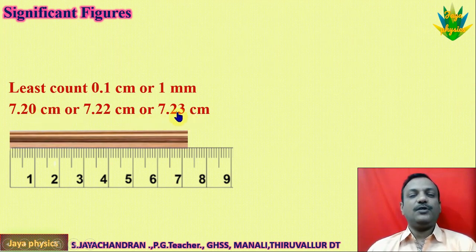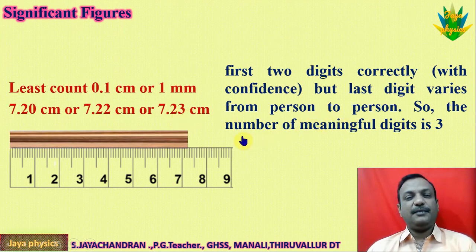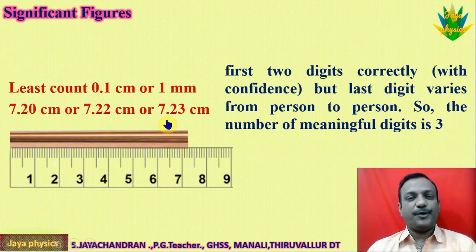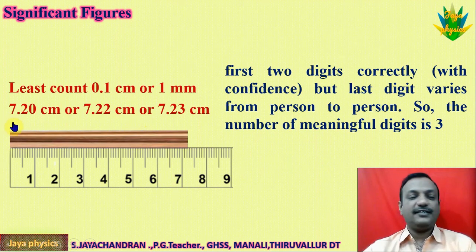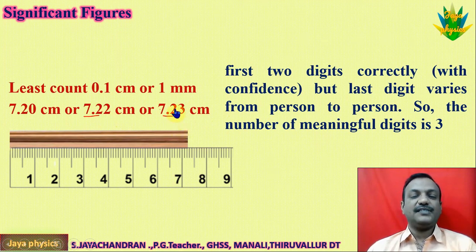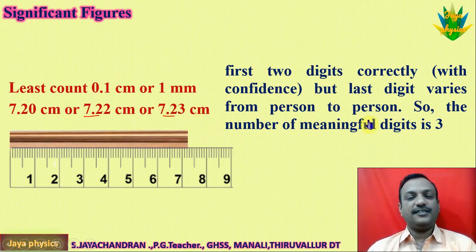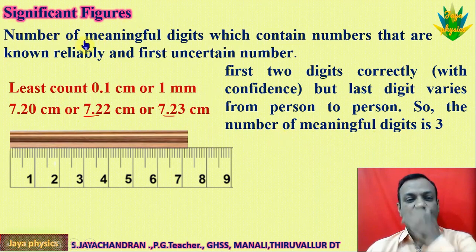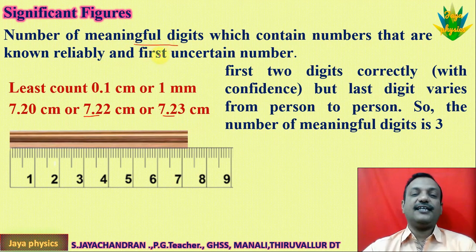These three numbers give us significant figures — meaningful digits. There are 3 significant figures here. The digits you can count on are 7 and 2 — that is 2 accurate digits — plus one uncertain digit. 2 plus 1 equals 3. So the 3 numbers are significant figures. Significant figure is the number of meaningful digits: those that are known and reliable, plus one uncertain digit.